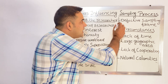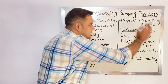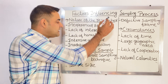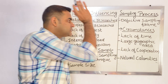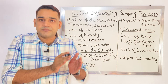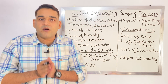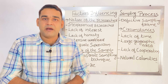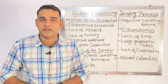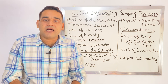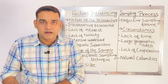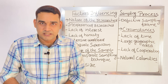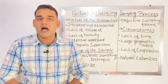The last thing coming under the factors influencing sampling process is circumstances — related to the situation. First one coming under circumstances is lack of time. To conduct the research we need time, but at a limited period of time with a deadline, it will affect the sampling process because there is no proper time. You are in a hurry to do it, but you have to complete the research. Lack of time will affect the sampling process.